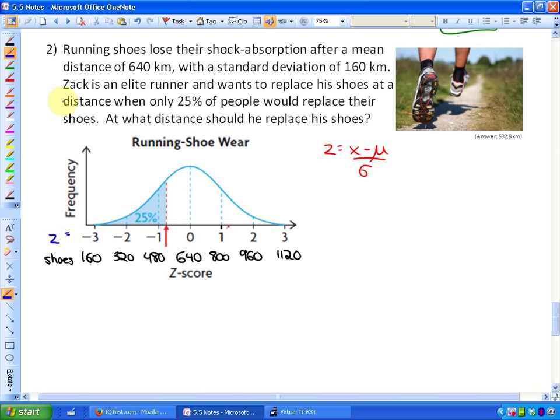The next part says Zack is an elite runner and wants to replace his shoes at a distance when only 25% of people would replace their shoes. At what distance should he replace his shoes? Here's roughly 25% below where he wants to replace his shoes. If I was to estimate, it's going to be a lot more difficult when we get more practical with this, but if I was to estimate, that's somewhere close to 480, and between 480 and 640 I'm gonna guess that it's roughly 510 kilometers.